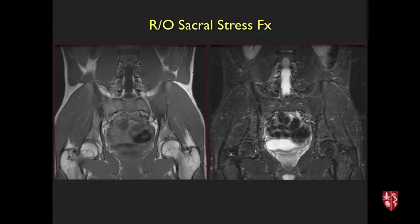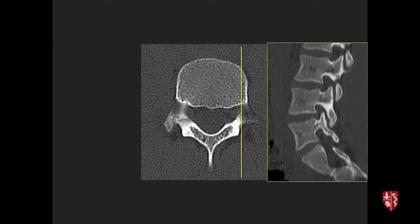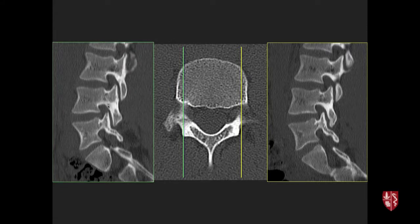A final case: MRI ordered to rule out sacral stress fracture was unremarkable in the sacrum, but careful inspection revealed a small focus of increased signal in the right pedicle of L4. CT confirmed a stress fracture of the right L4 pedicle — near the pars interarticularis — visible as a subtle lucency on reformatted images. This highlights the importance of careful review of all anatomy on the MRI.